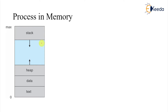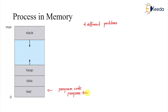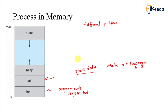As you can see here, there are four different partitions of memory. The text segment is where the program code will be loaded — sometimes it is called program text. Then there is data, which is your static data. You can think of all the variables that are declared static in C language. These two partitions — text and data — are allocated at compile time.